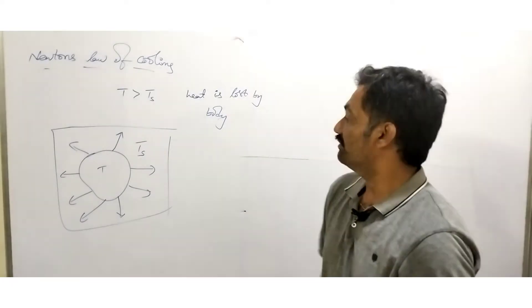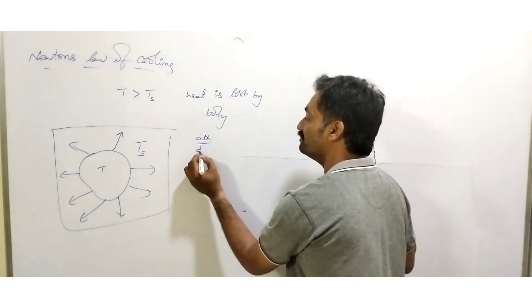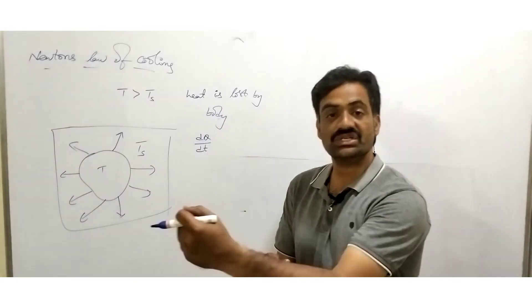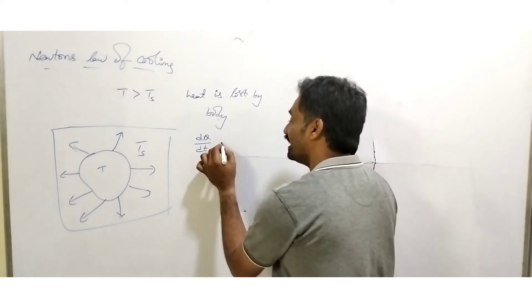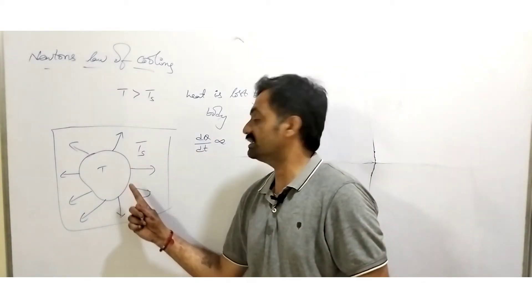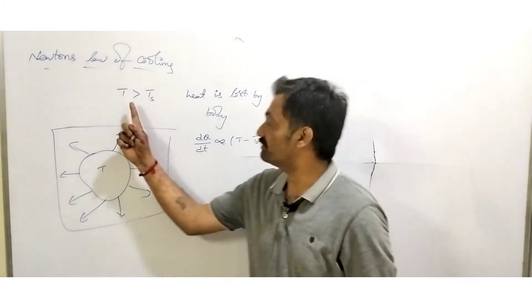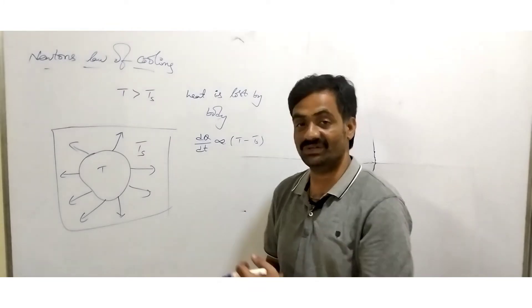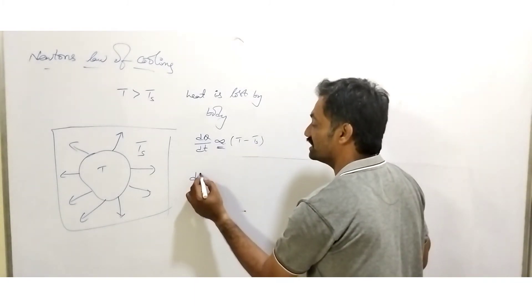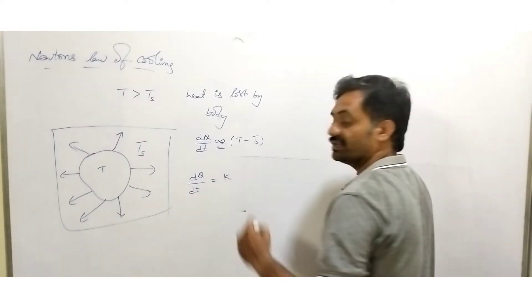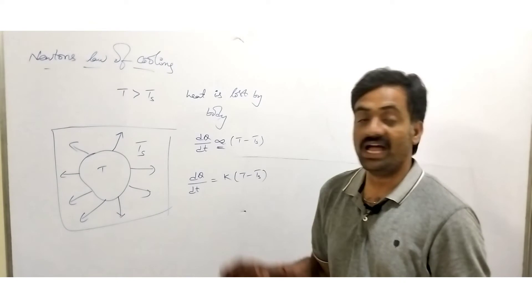Observe that here heat is being lost by the body. The rate of loss of heat is represented as dQ/dt, where dQ represents change in heat and dt represents change in time. This rate of loss of heat is directly proportional to the temperature difference between the body and the surroundings, represented as T minus T_s. To remove this proportionality we add a constant k, giving us dQ/dt = k(T − T_s).